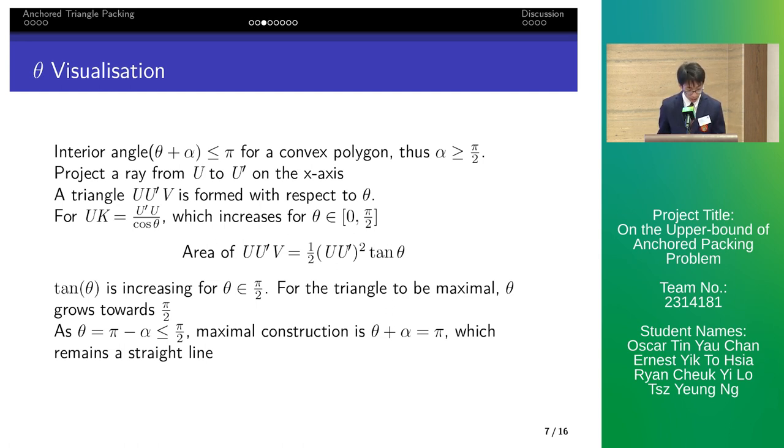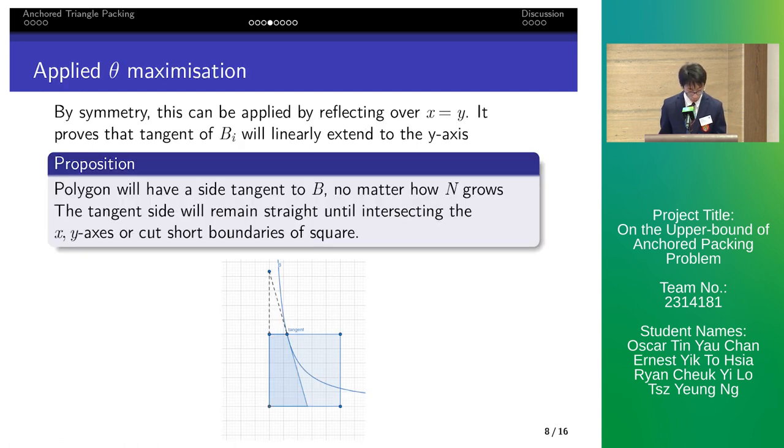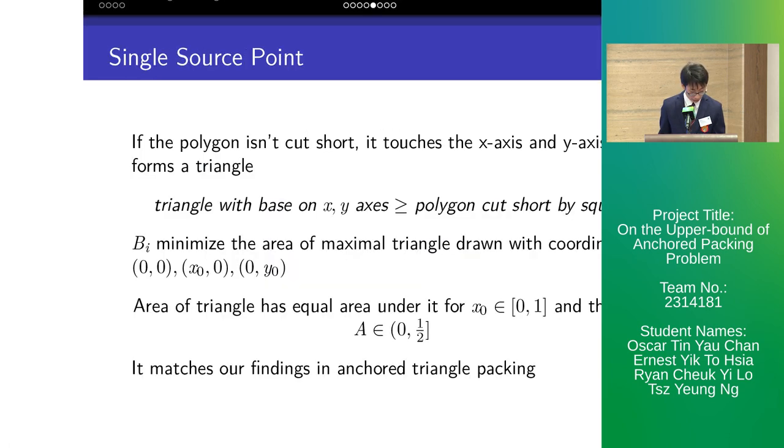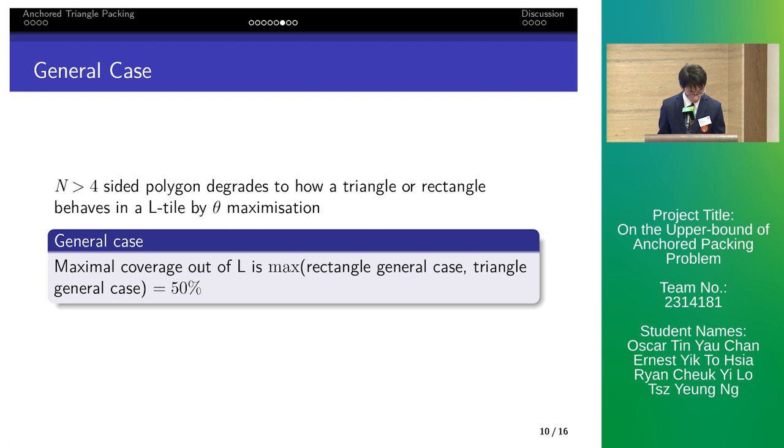By symmetry, this can be applied to the y-axis for vertical extensions. We deduce that for n sided polygons, the side tangent to b will extend to x-axis for y-axis for maximal coverage. For the case of single source point, we further extend the idea of the tangent line to form a triangle with x-axis and y-axis. The least kept triangle of equal area is the largest polygon. Thus, we can apply our findings in triangle packing.